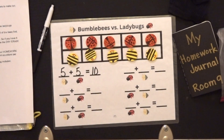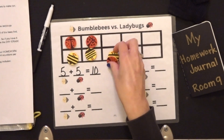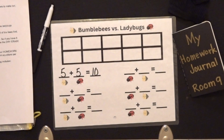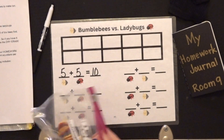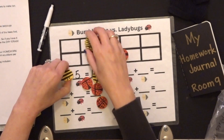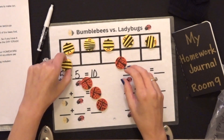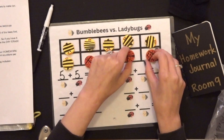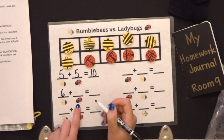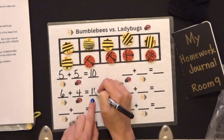After I record that one, I am going to put them back in the bag and shake them up again. Shake it, shake it, shake it if you can. And spill. Now I am going to start with the bumblebees: 1, 2, 3, 4, 5, 6. And now let's record. How many bumblebees? 6. How many ladybugs? 4. Those are our friends of 10. And how many insects all together? 10.